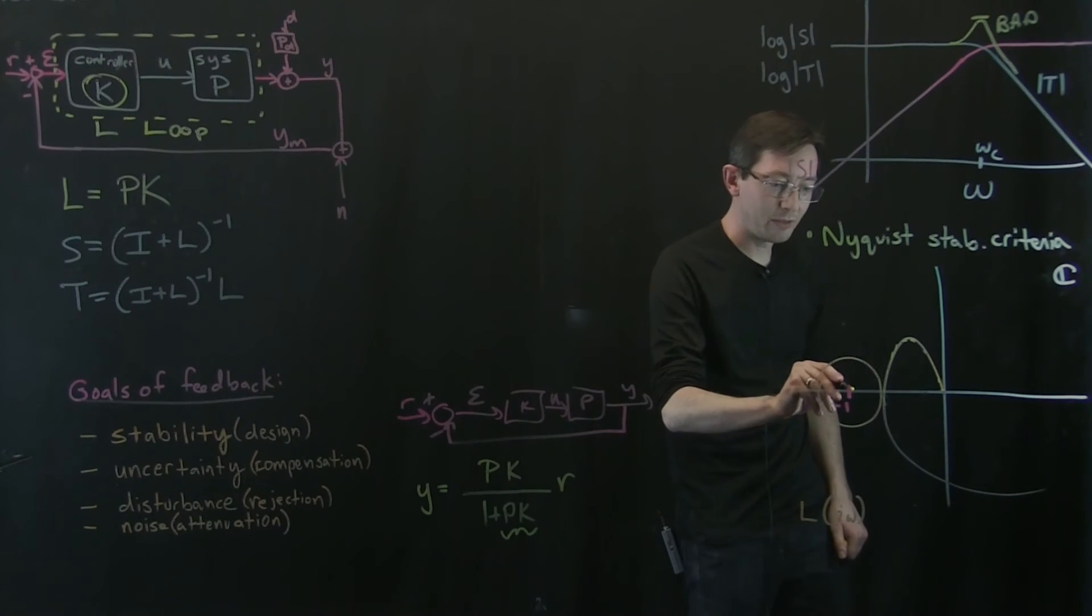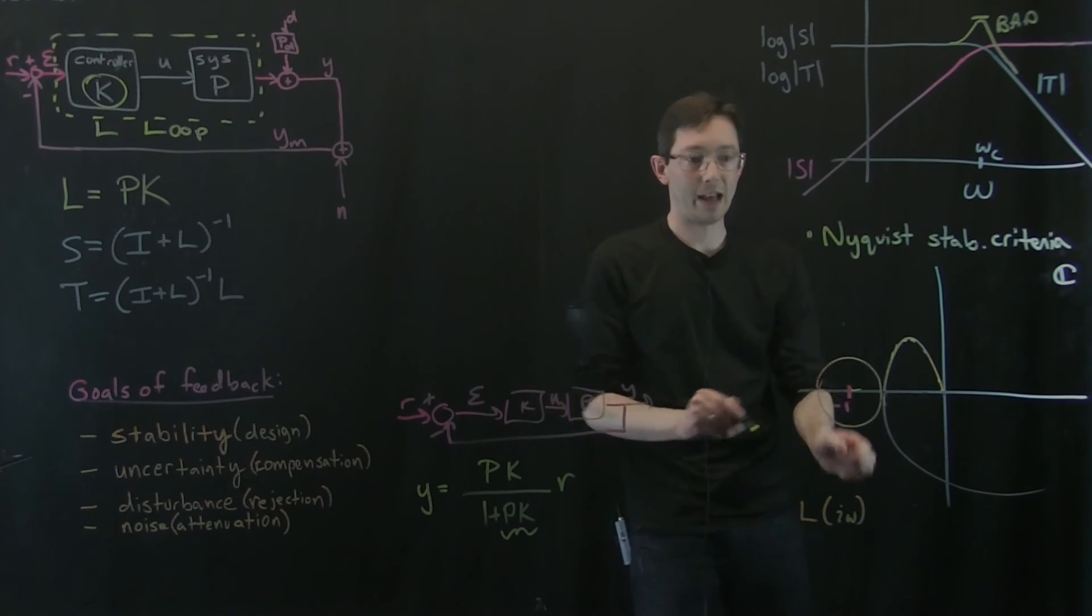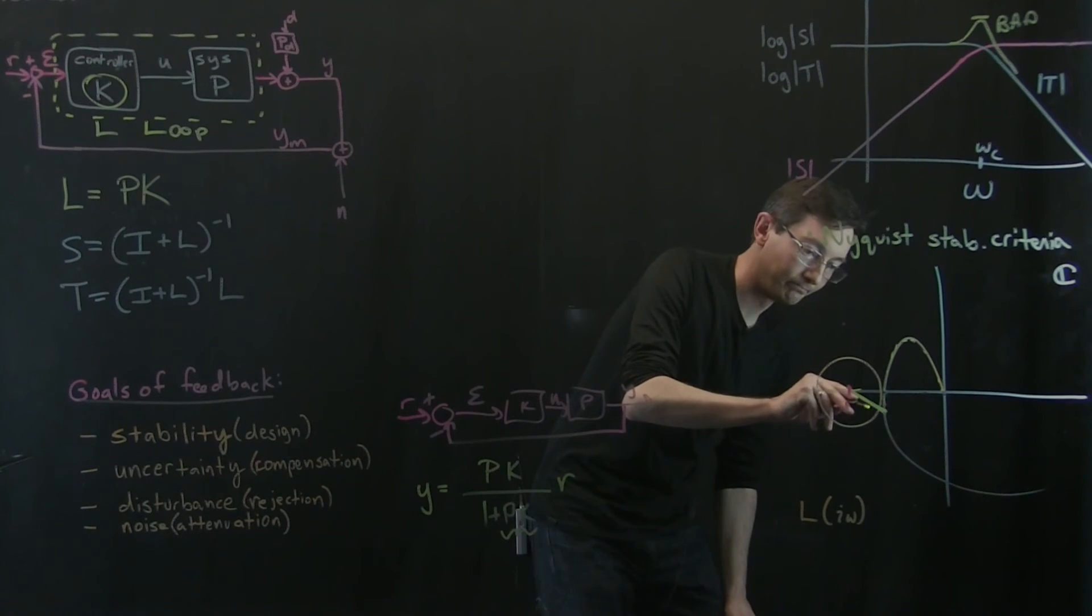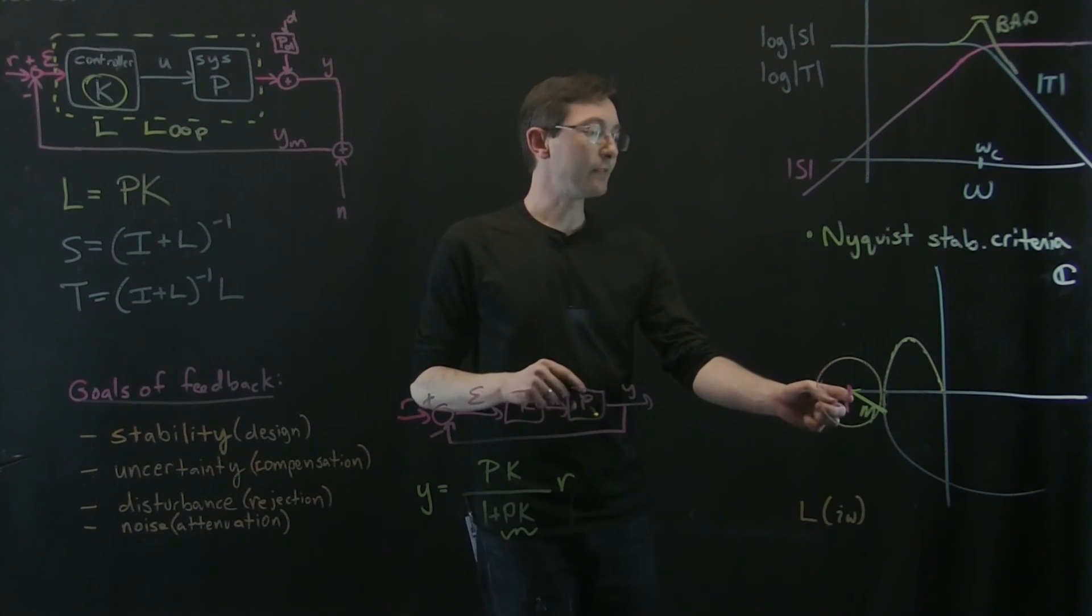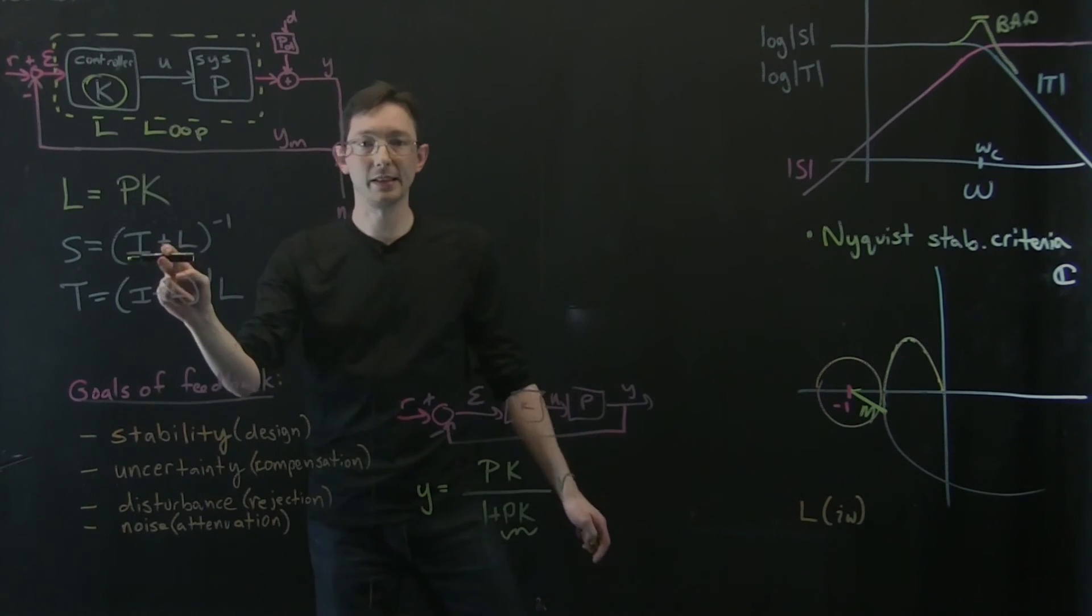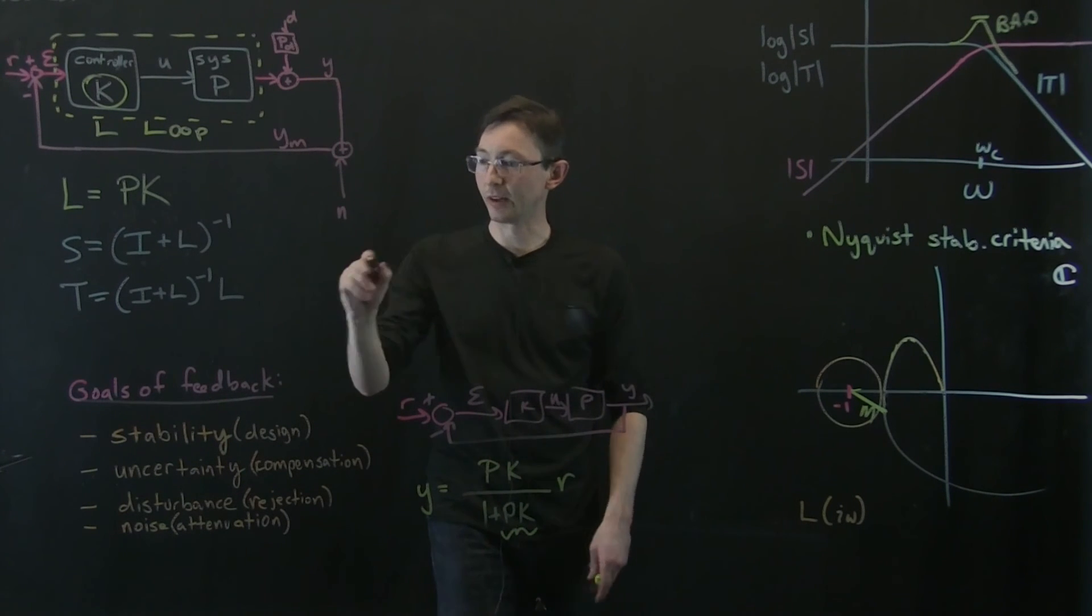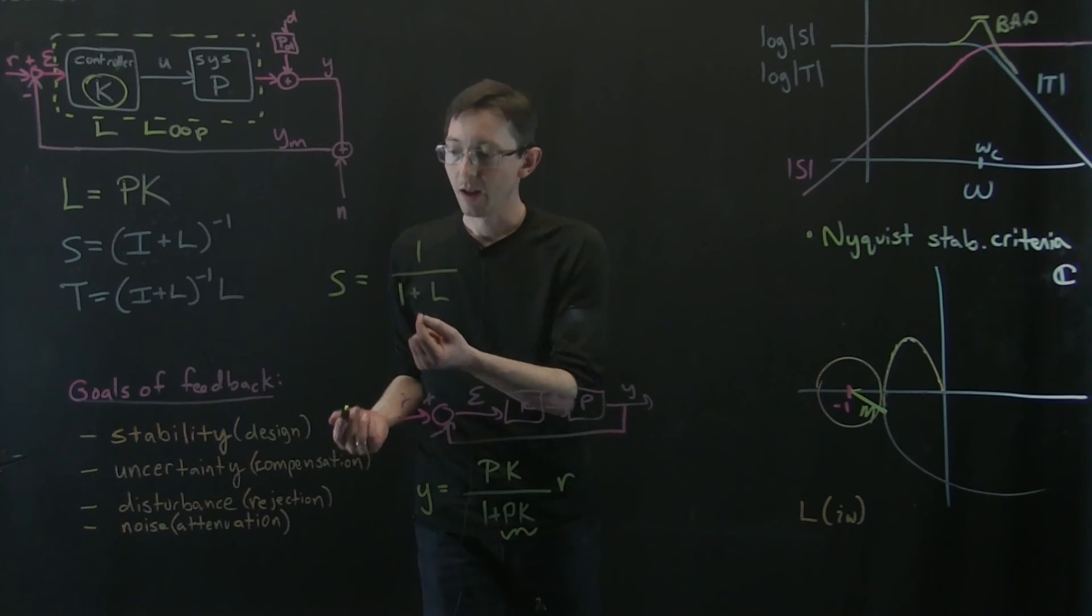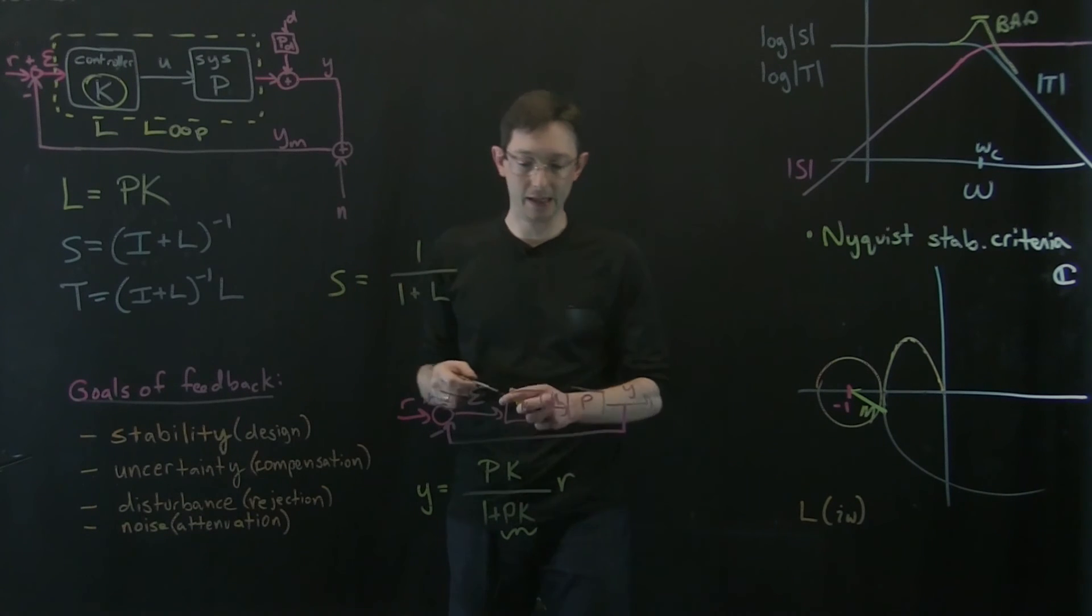And the cool thing is that this minimum distance, I drew it actually so that the minimum distance is kind of along the real axis, but I could have it so that the minimum distance, let's call that m, the minimum distance. This is very closely related to the sensitivity function. Okay, so if I take a single input single output system, I'm going to say S equals one over one plus my loop transfer function. Now, if, okay, so what I'm trying to say is, this is